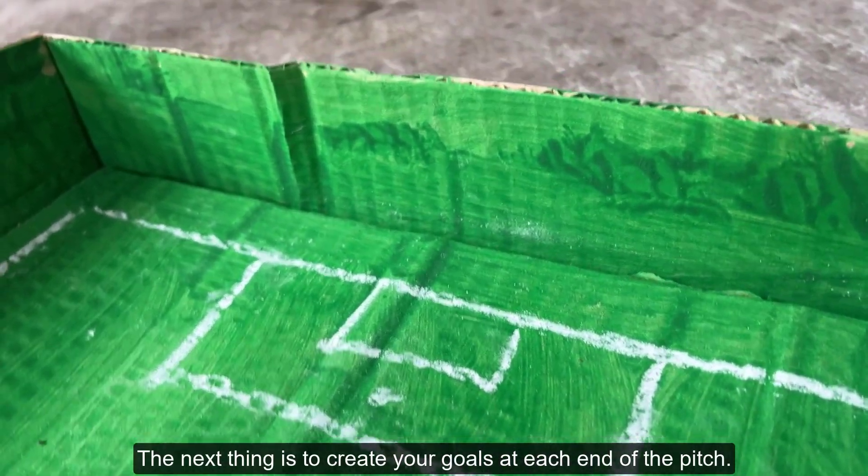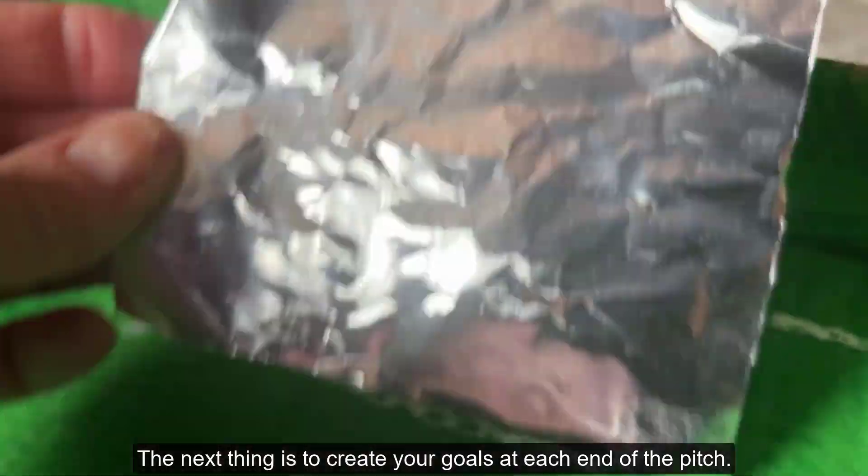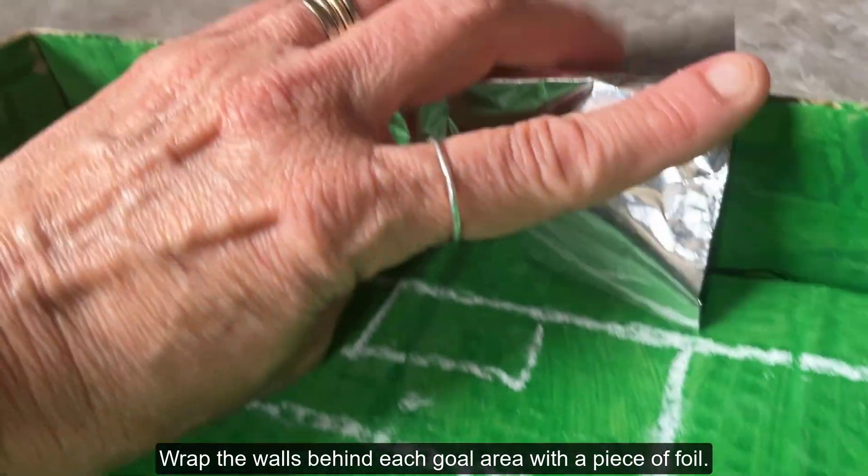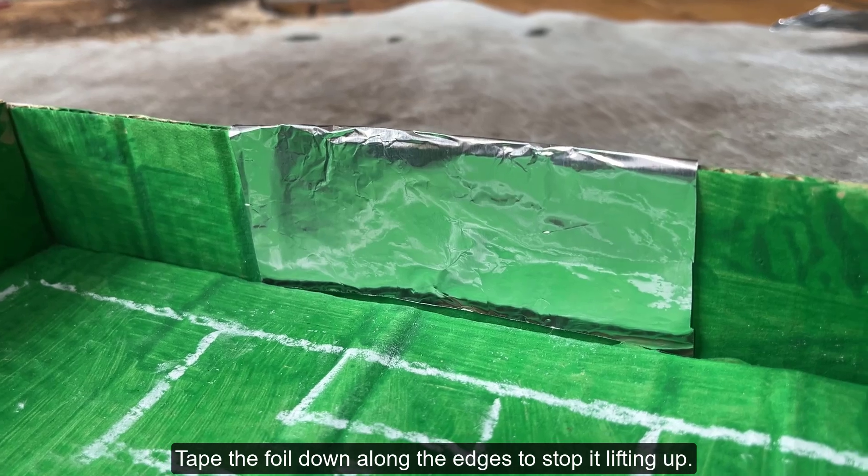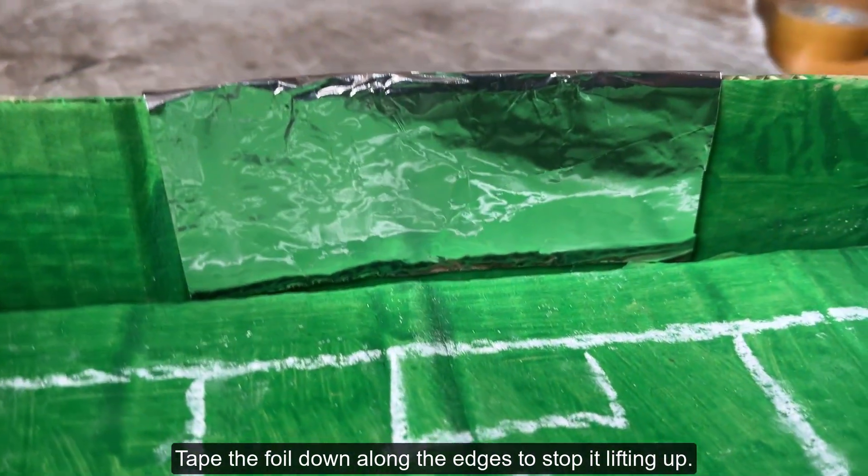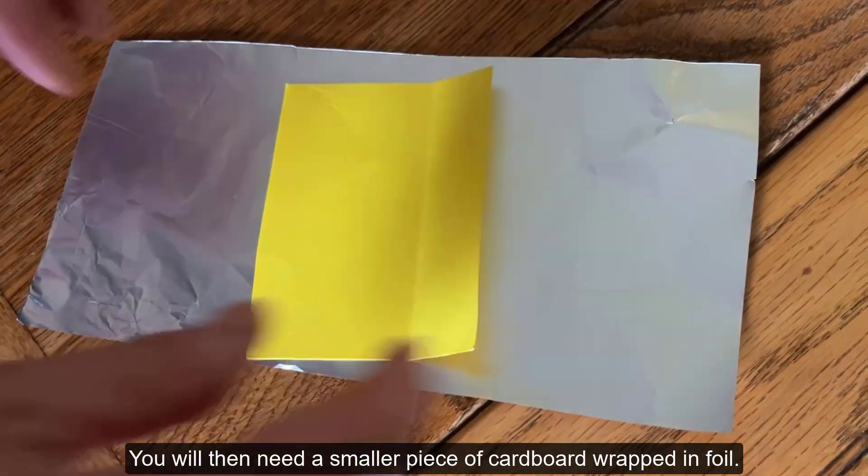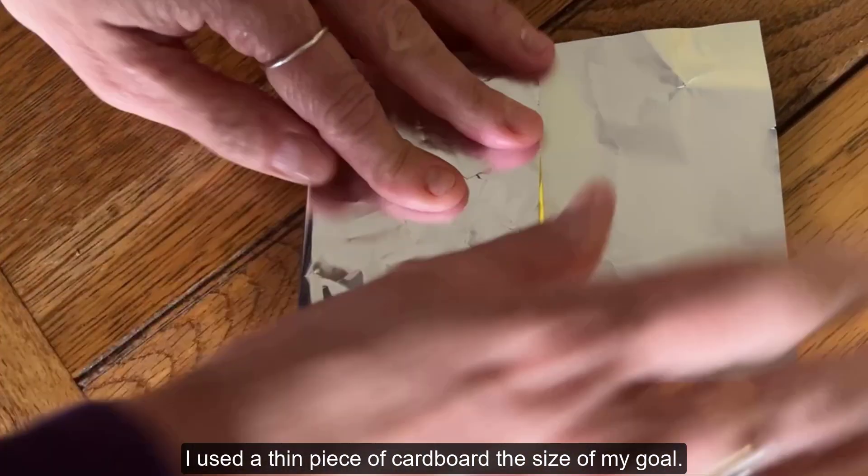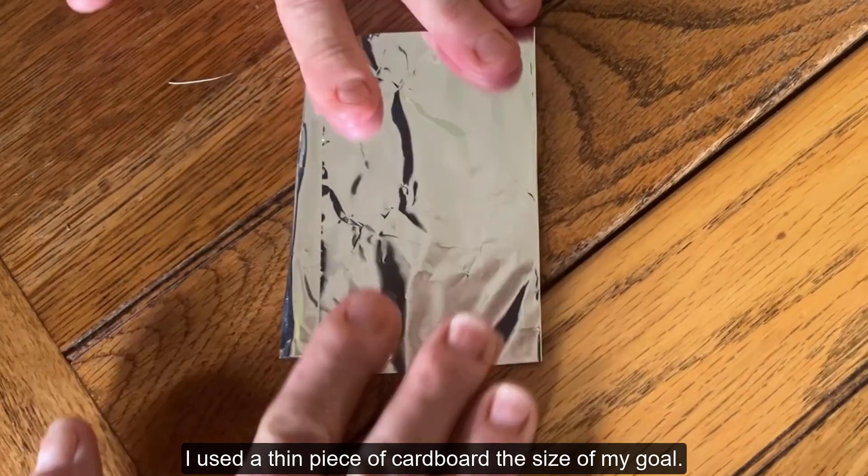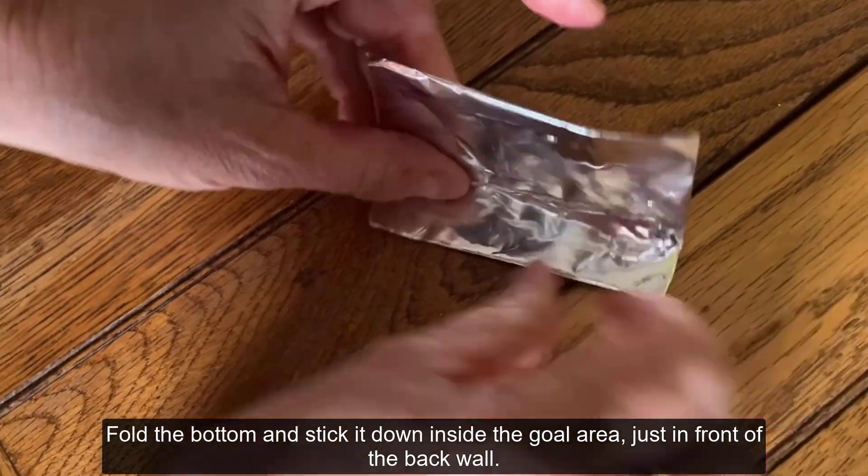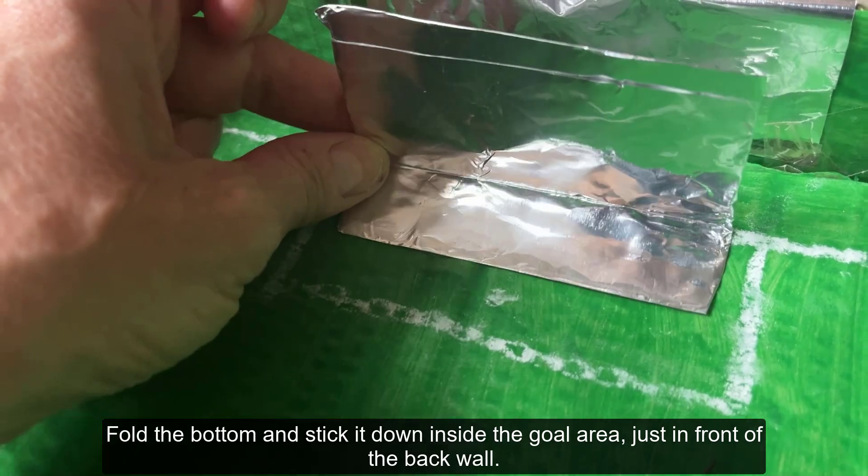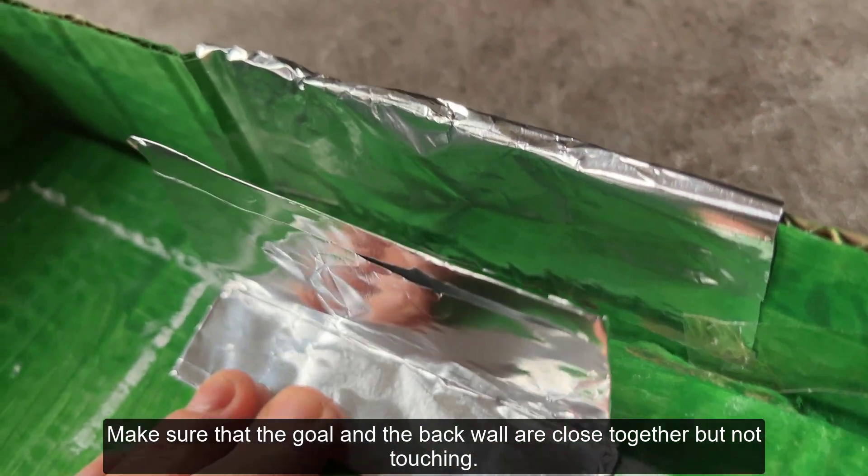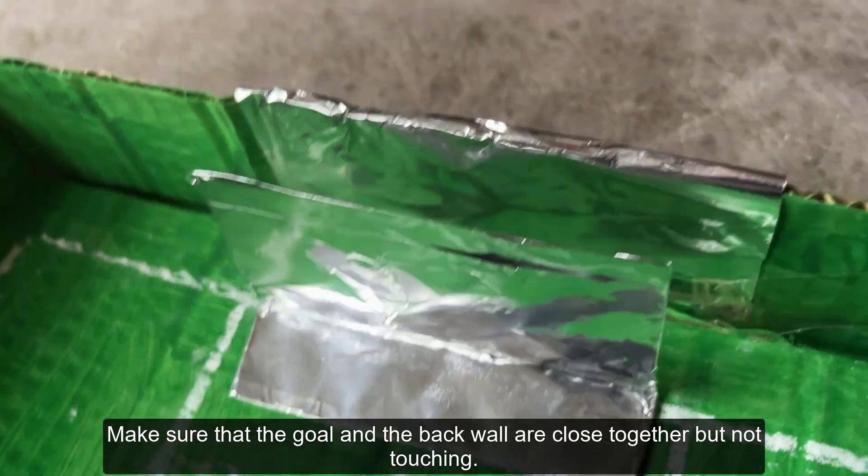The next thing is to create your goals at each end of the pitch. Wrap the walls behind each goal area with a piece of foil. Tape the foil down along the edges to stop it lifting up. You will then need a smaller piece of cardboard wrapped in foil. I used a thin piece of cardboard the size of my goal. Fold the bottom and stick it down inside the goal area, just in front of the back wall.